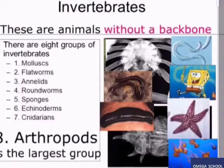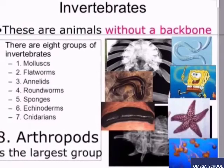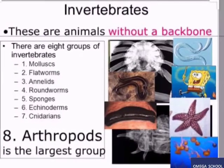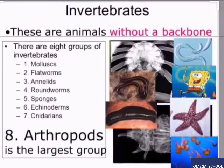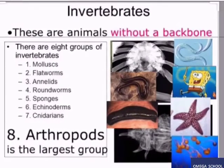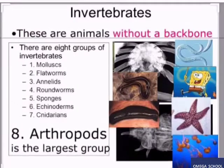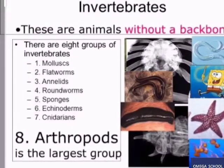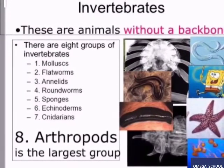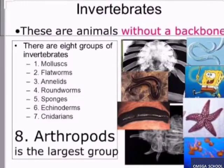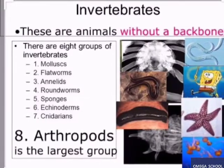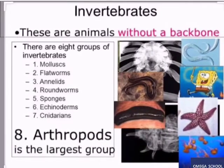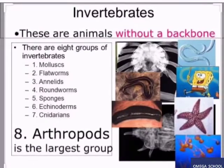Animals without a backbone are called invertebrates. There are eight groups of invertebrates: Mollusca, Platyhelminthes (flatworms), Annelida, Nematoda (roundworms), Porifera (sponges), Echinodermata, Cnidaria, and Arthropoda. These are the main groups of invertebrates.